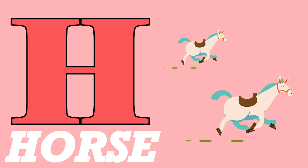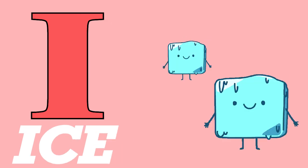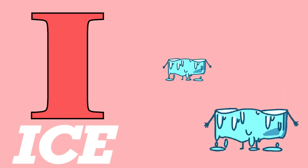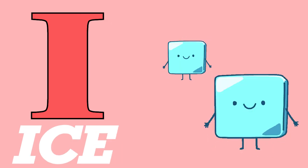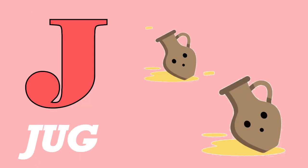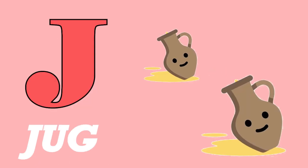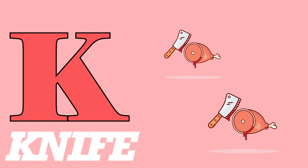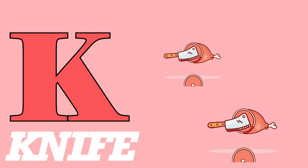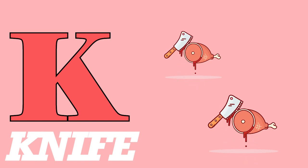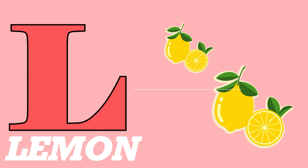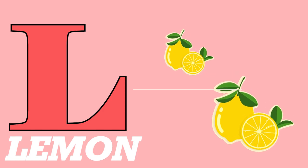H for horse, horse means ghoda. I for ice, ice means barf. J for jug, jug means jag. K for knife, knife means chaku.